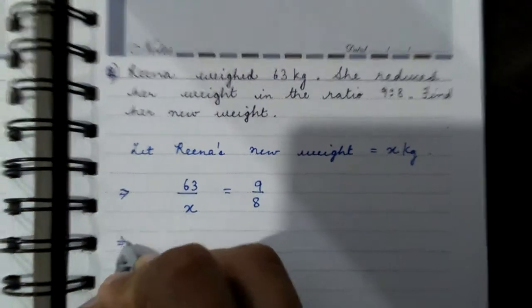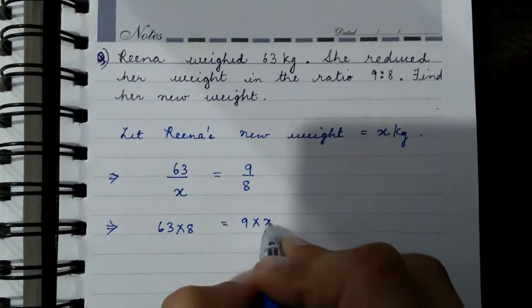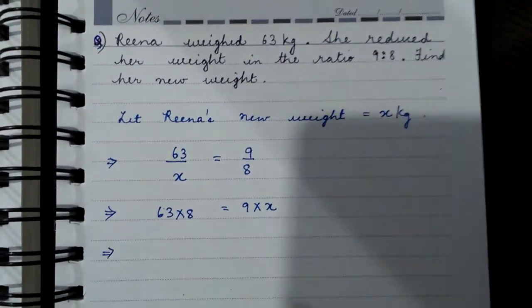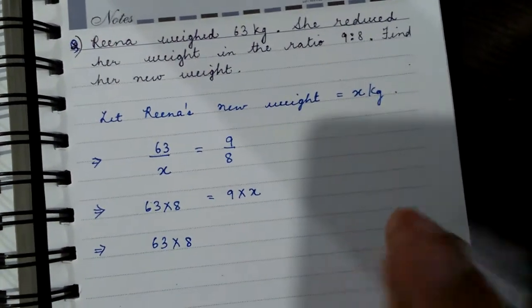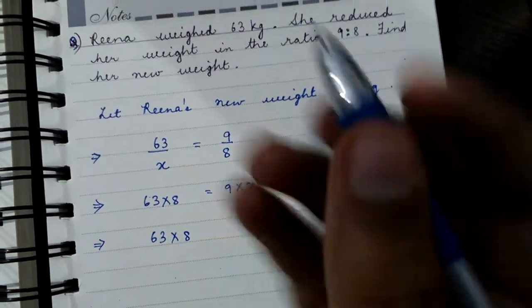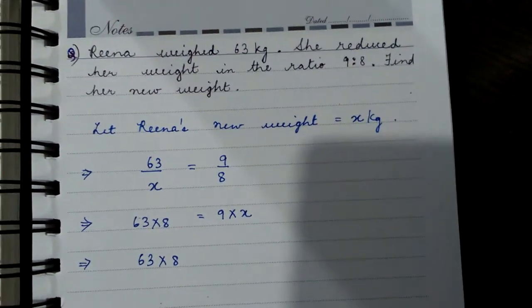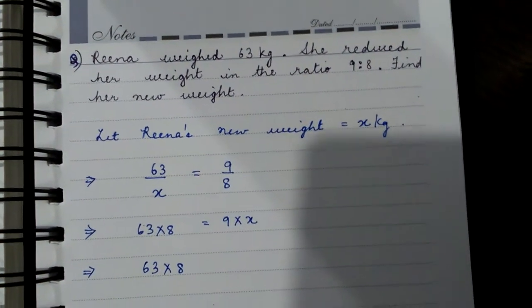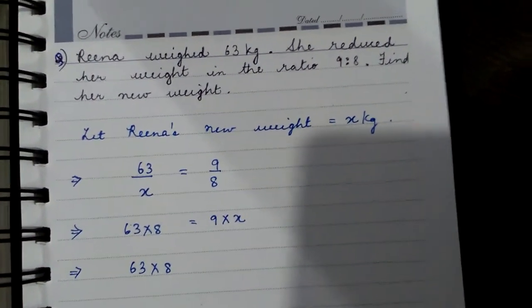Simply we have to do cross multiplication. We only want to find x, so we have to bring 9 to the left-hand side. Whenever we interchange the numbers, that is when we put it on another side, we have to reverse the signs. So here it is getting multiplied with x, so when we put it on the left side, we have to do the reverse—we have to divide it.